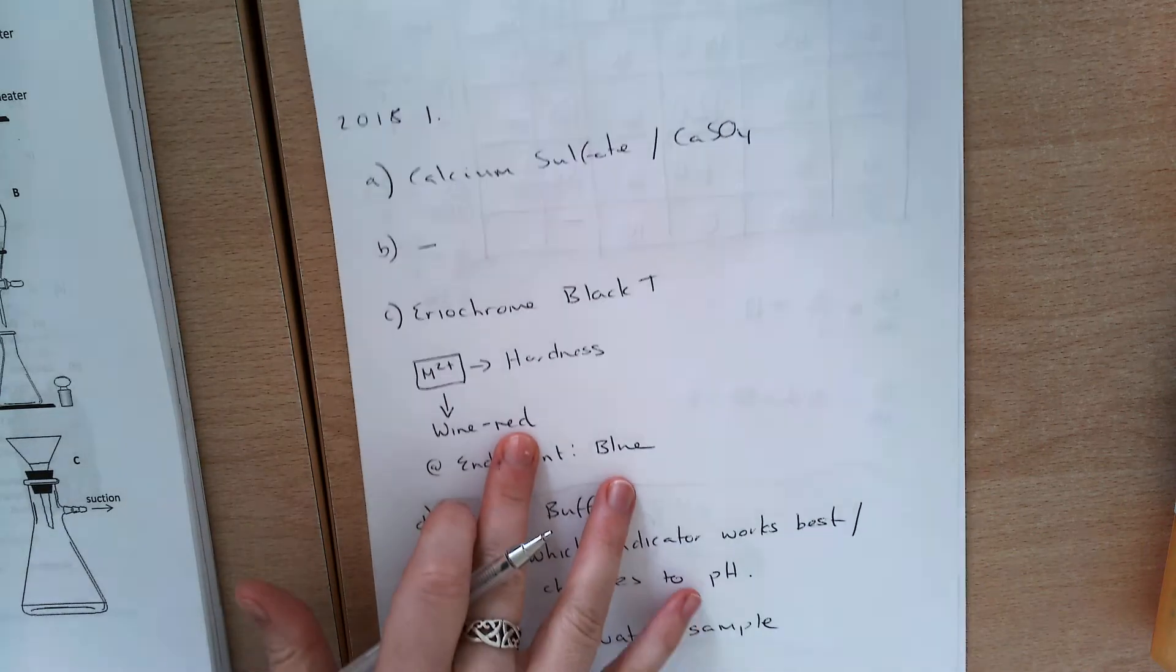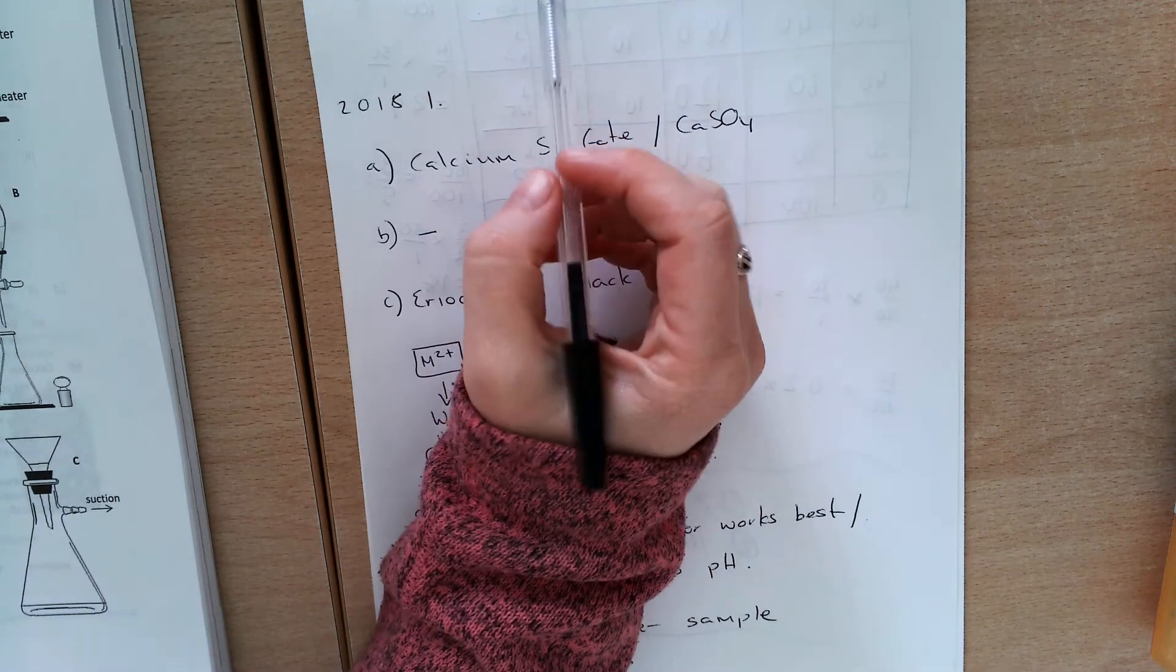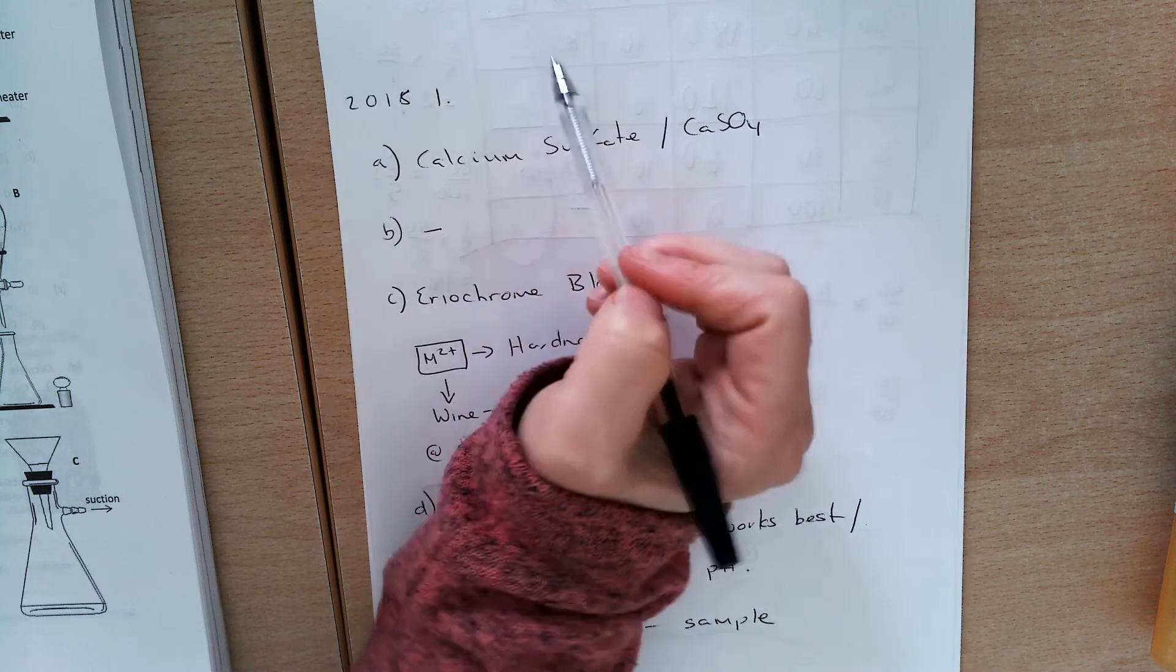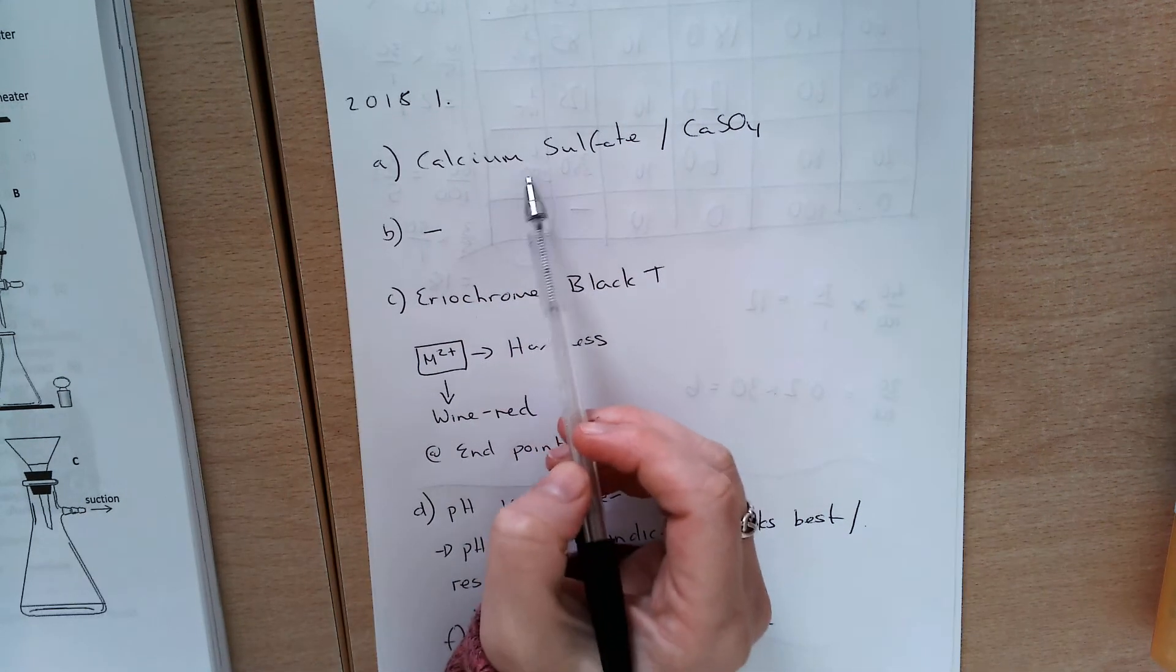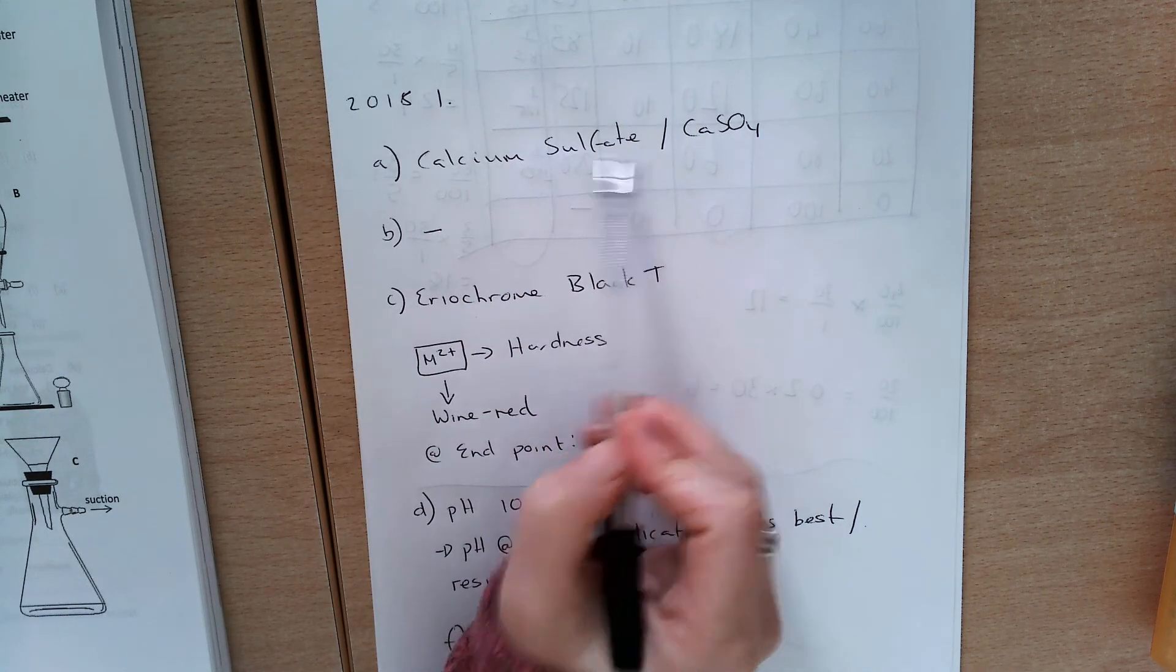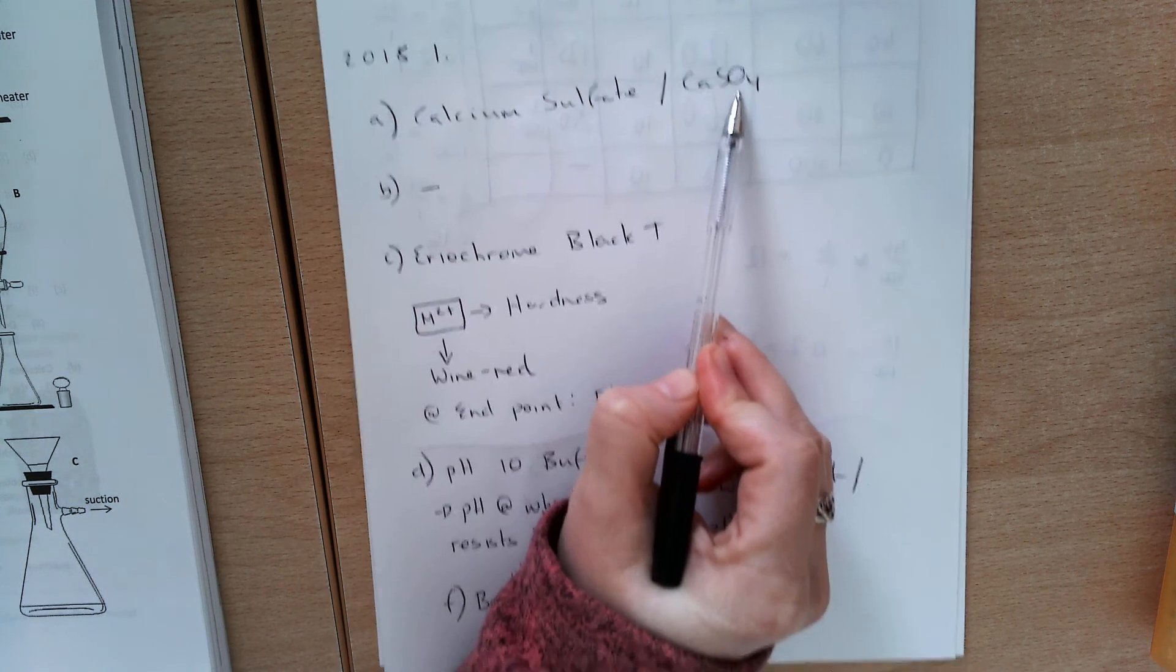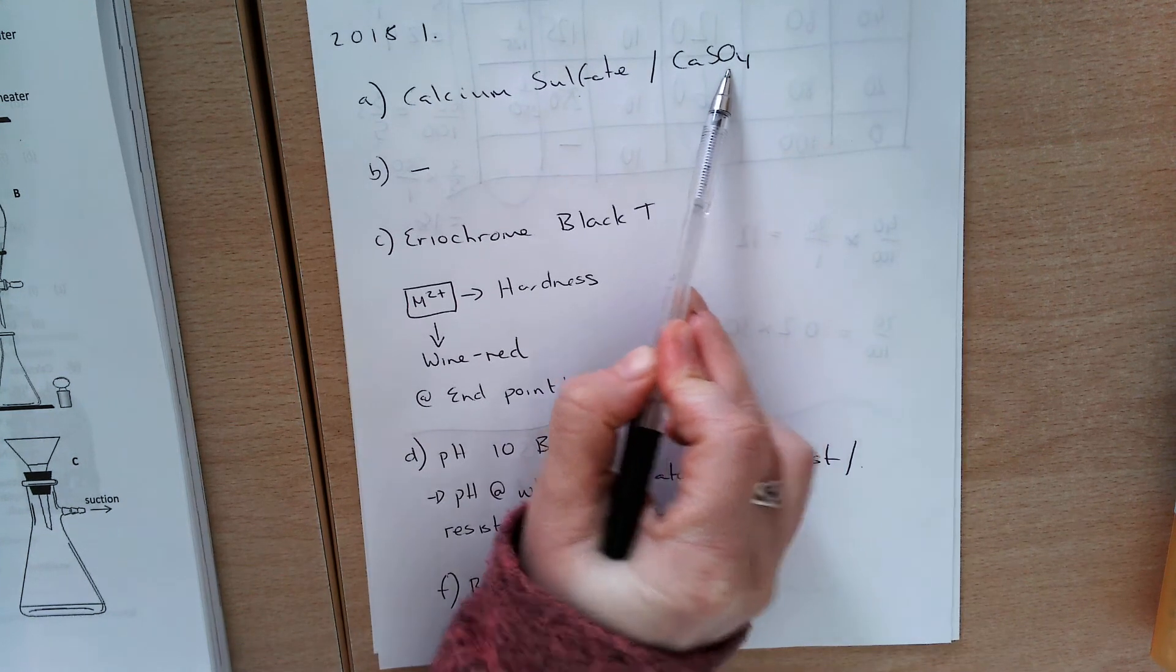Okay, so I'm just going to have a look here. I've got a question for 2018 question 1. So identify a compound of calcium that is one of the main causes of permanent hardness. You're only asked to identify, so calcium sulfate or CaSO₄ will get you your marks.